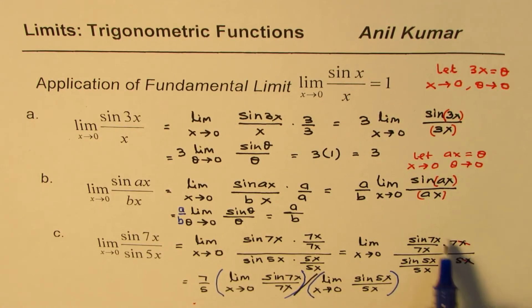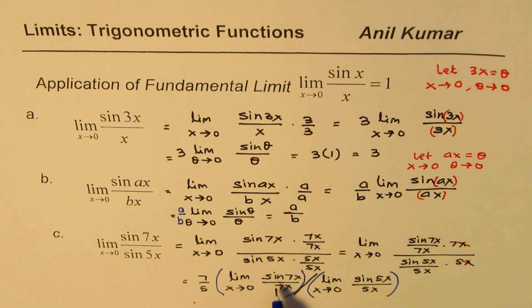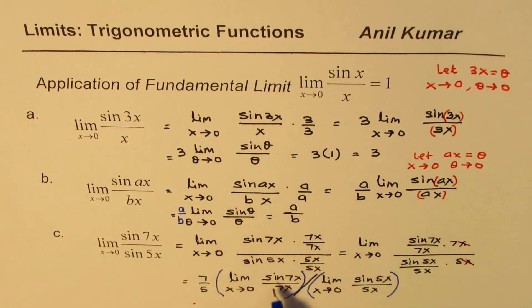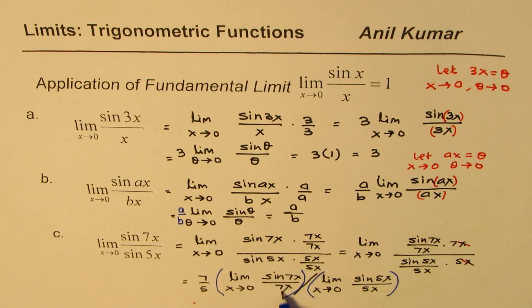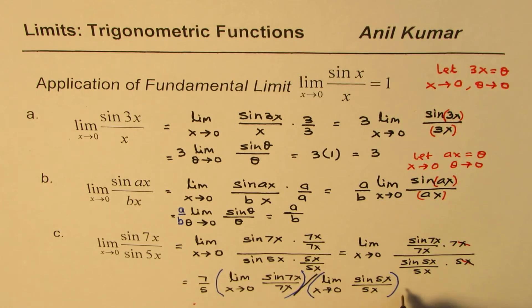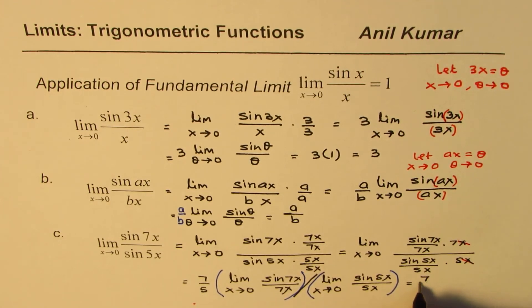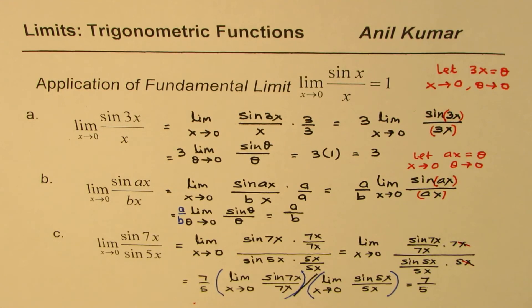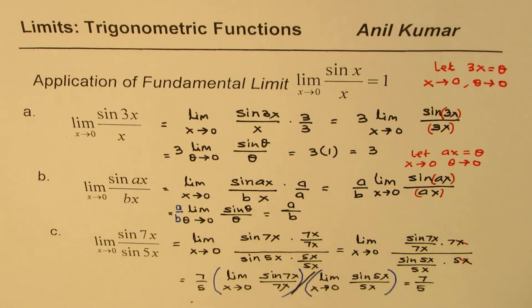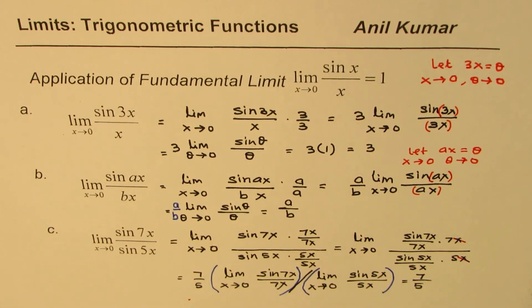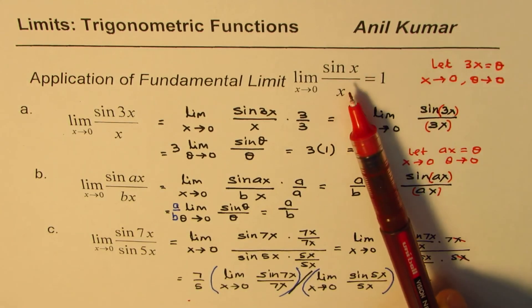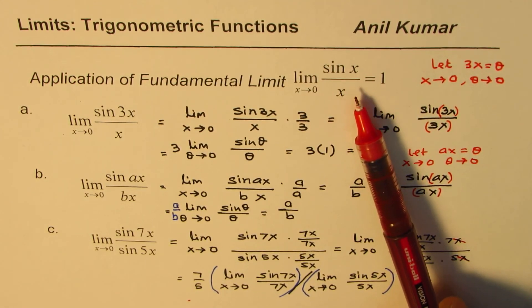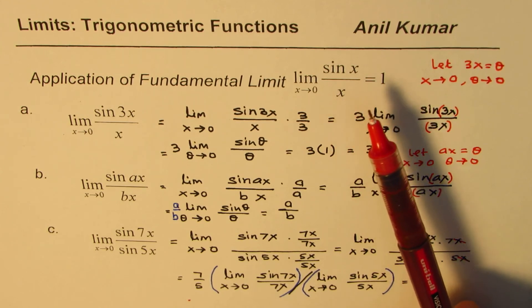7 and 5 are constants. I took them outside. We know from the above examples that sine 7x over 7x limit x approaches 0 is 1. This is also 1. Therefore, we get a result, which is 7 over 5. So 7 over 5 is the answer for part C. So these are three related questions where we have directly applied our fundamental limit for trigonometric function, which is limit x approaches 0 of sine x over x equals to 1.